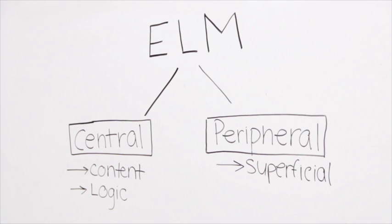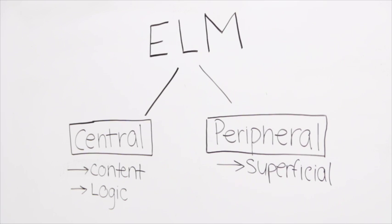There is a two-step process called the elaboration likelihood model, which refers to two routes of persuasion that can be activated.